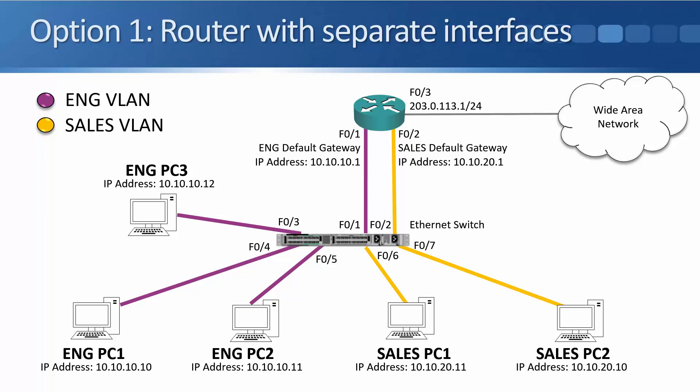On the switch, Fast Ethernet 0/1 connected to the router is placed in the engineering VLAN. For the sales side, router interface Fast 0/2 serves as the default gateway with IP address 10.10.20.1. On the switch, Fast Ethernet 0/2 is configured as an access port in VLAN 20 for sales.